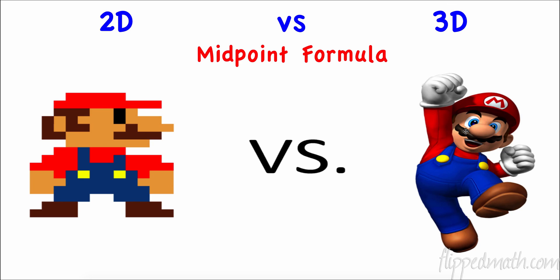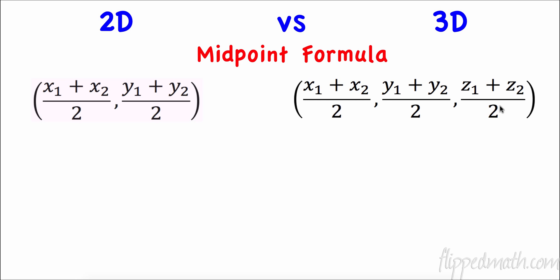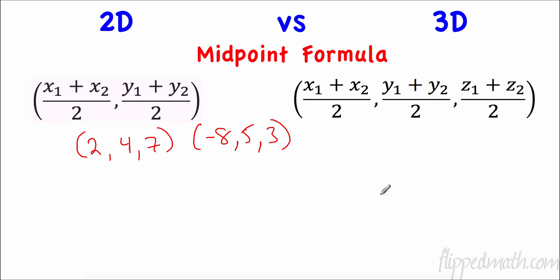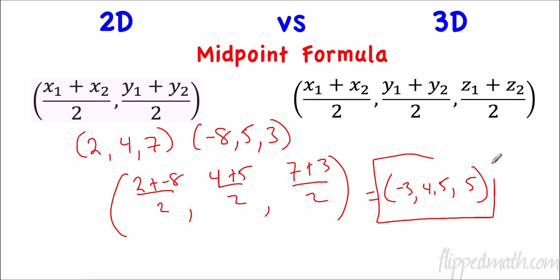Just like in the x-y coordinate plane, we have a midpoint formula between two points. In 3D it's exactly the same as the 2D formula — we just add a z-component. So: (x₁ + x₂)/2, (y₁ + y₂)/2, (z₁ + z₂)/2. For the points (2, 4, 7) and (-8, 5, 3): we get (2 + (-8))/2 = -3, (4 + 5)/2 = 4.5, and (7 + 3)/2 = 5.